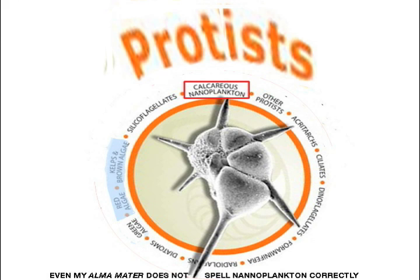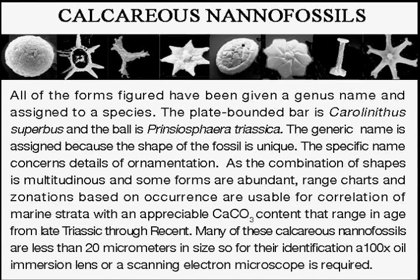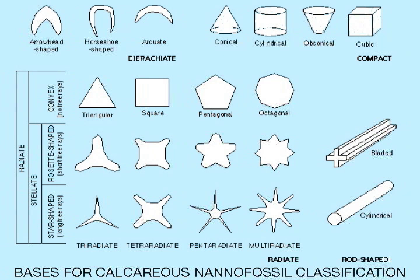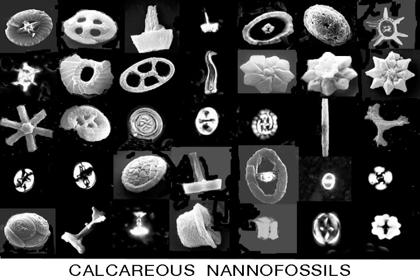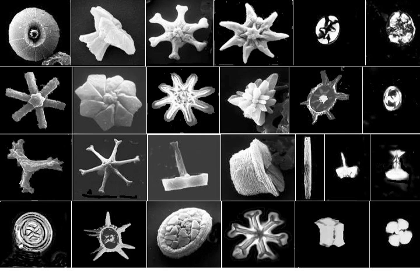Calcareous nanofossils are the constructions of calcium carbonate that comprise the framework, or skeleton, of single-celled algae. They are produced inside the cell, and in some cases migrate to its surface. The variety of form of these constructions is almost limitless, but as shown here, they have been categorized. Most are 20 microns or less in major diameter. They occur in marine formations ranging in age from late Triassic to recent, but are more abundant in Jurassic and later strata. Their variety and the changes in their assemblages make them excellent markers and also good indicators of paleoenvironment.